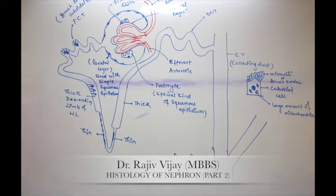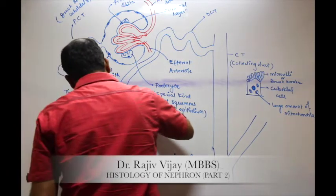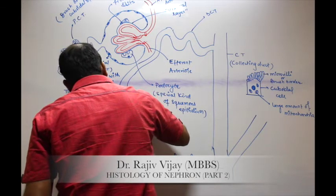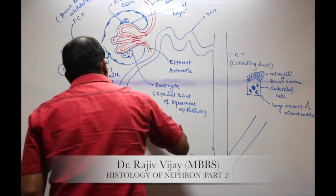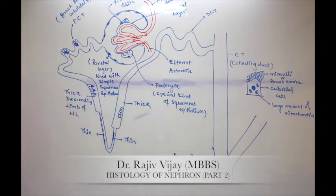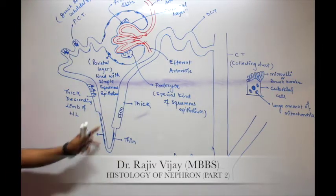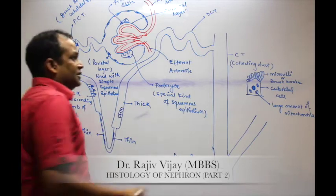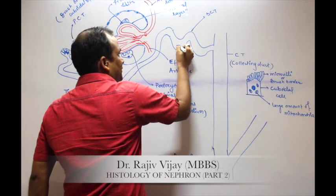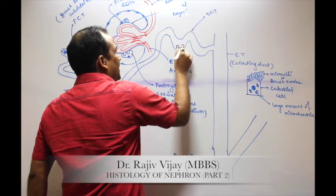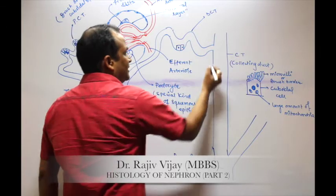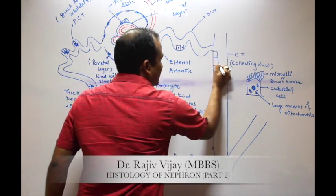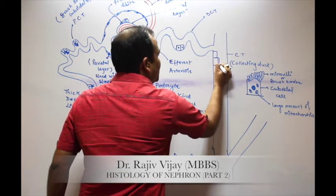The thick segment again contains cuboidal epithelium. The thick segment's continuation is the DCT, which also contains cuboidal epithelium, and the collecting duct also contains cuboidal epithelium.